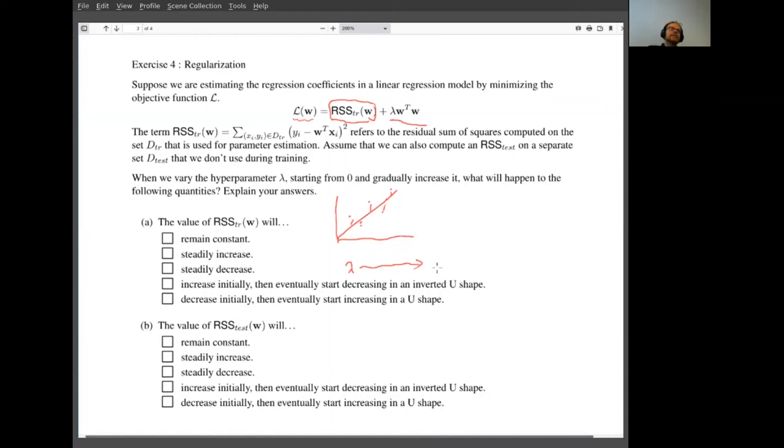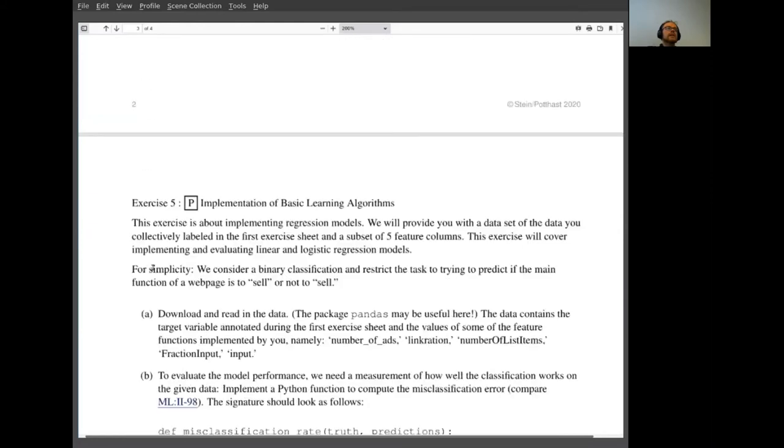And in the second part, the question is similar, lambda increases, starting from zero, what happens to the residual sum of squares, but not on the training data, but on the second data set that we did not use during training. And these are asked in very general terms, and you should think about this question in very general terms.